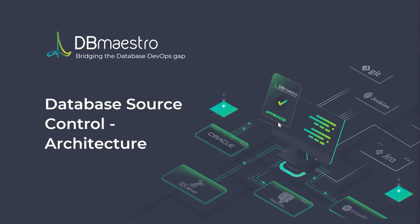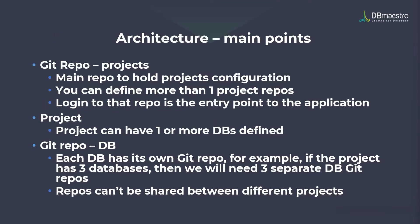There are a few main terms you need to understand before looking into the architecture. The first one is git repo projects and the git repo DB. The git repository project is the main repository that holds all the project configurations, user information, and also your configurations for the database. All the information is stored here, and this is the git repo link that all users will be using to log in to their source control application.